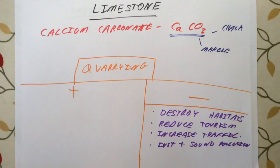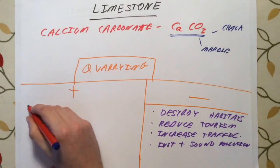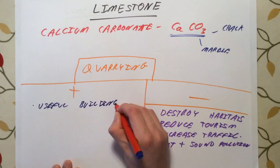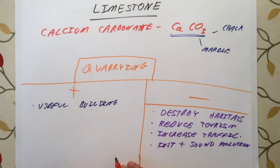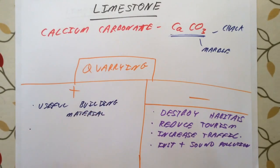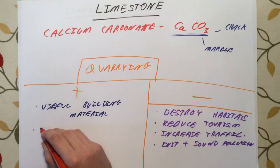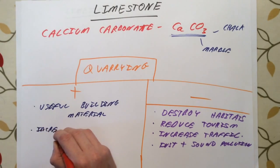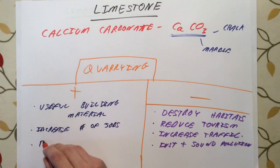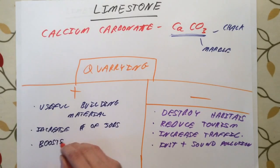If you get three or four ideas in there you're going to be getting five or six marks every time. On the flip side, we have some positives. Limestone is a really useful building material — it's used to make glass, cement, and concrete, and it's even used as part of the process to make bread. If you have a big quarry in your town it's going to bring a lot more jobs and it's going to boost the local economy.